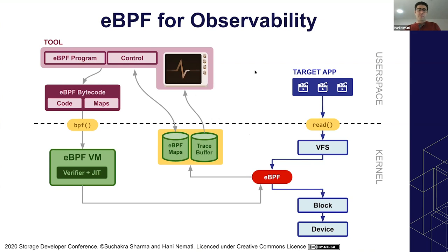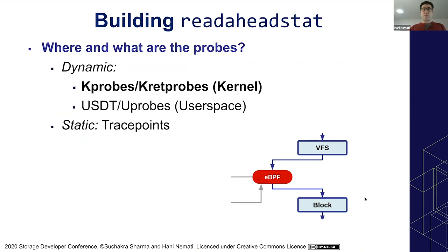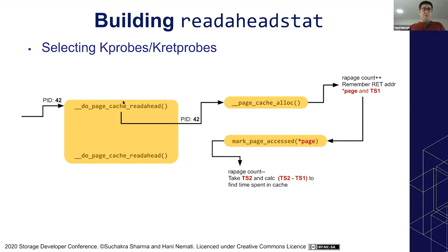Remembering what Suchakra explained about eBPF — we want to build such a tool. First we need to know where to put our probes and what kind of probes to use. We have dynamic and static probes: the dynamic ones are kprobes and kretprobes, and we also have USDT for user space. For this project we use kprobes and kretprobes. Specifically, we attach to the do_page_cache_readahead function entry and exit, to page_cache_alloc, and to mark_page_accessed.